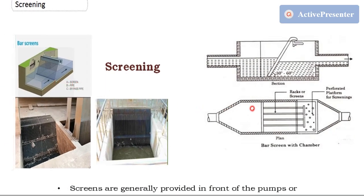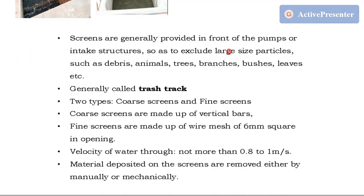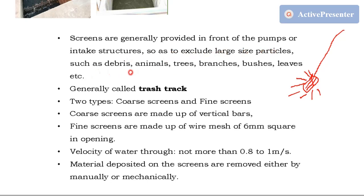The definition of screening: screens are generally provided in front of pumps — you can call it a foot valve. Before that pipe there will be one screen, and the water comes through while leaves and debris remain there. In big projects larger screening units are used so as to exclude large size particles such as debris, animals, trees, branches, bushes, and leaves. These are generally called trash racks.